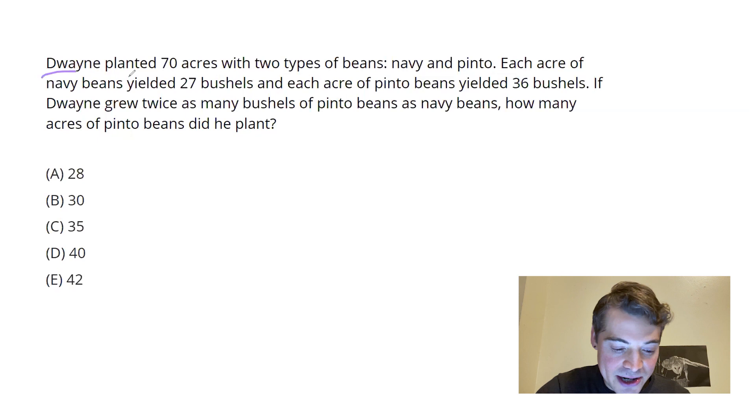My main man Dwayne the Rock Johnson has a bean farm. He's got 70 acres here, but these two kinds of beans produce different yields. Pinto, you get 36 bushels an acre. Navy, you get a little less, 27 bushels an acre.